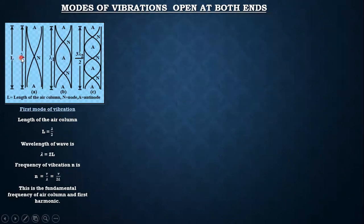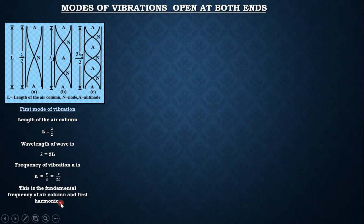For the first mode of vibration, capital L is equal to lambda by two, so the wavelength is 2L. Hence the frequency of vibration n equals v by lambda, which gives v upon 2L. This is the fundamental frequency, also called the first harmonic.